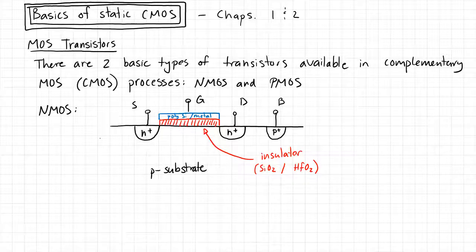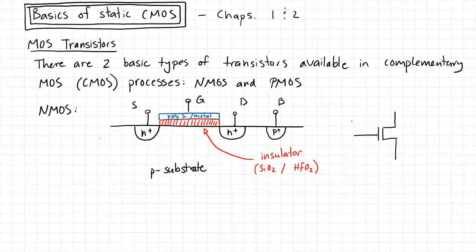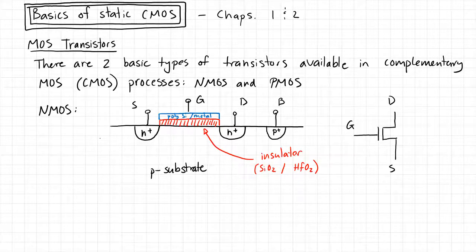We draw the symbol for such a transistor in schematic form as follows: we have our gate, drain, and source terminal. In analog integrated circuit design, we typically put the little arrow on the transistor to indicate whether it's NMOS or PMOS. In digital design, we typically just get lazy and leave the arrow off. When we get to the PMOS, we'll use a bubble to indicate it's a PMOS.